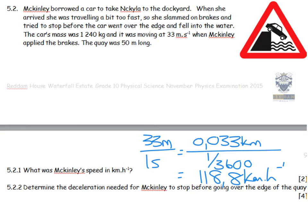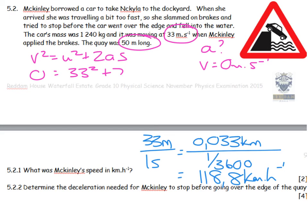Determine the deceleration needed for McKinley to stop before going over the edge of the key. So we've got a distance, we have got an initial velocity, we're interested in an acceleration, and we need to stop. So final velocity is 0 metres per second. So an equation of motion, V squared equals U squared plus 2AS. 0 is equal to 33 squared plus 2, I don't know A, and I've got a 50 metre long key, and I land up with A being negative 10.89 metres per second squared.